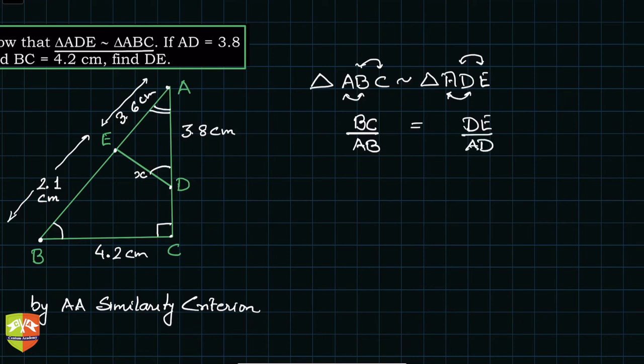Right, so what I've done is I've just taken corresponding sides. By these arrow marks you can identify which one is corresponding to which side. So BC clearly is equal to DE upon AD into AD. So DE is what we have to find out.